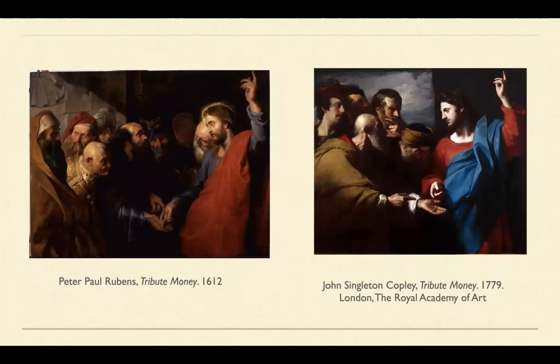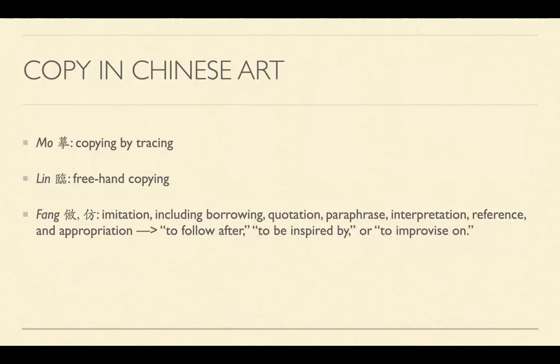Here are some examples. The image on the left is a painting by Rubens. The image on the right is an American artist studying in London at that time. In the case of Chinese art context, there are three terms related to imitative practice: mo, lin, fang.